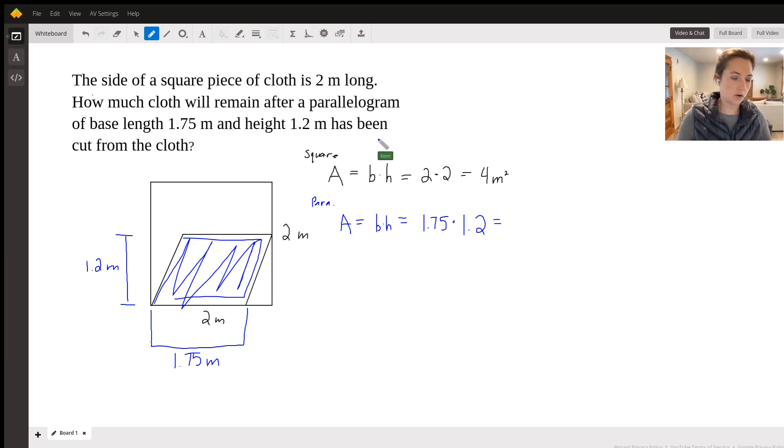And then you're going to type that into your calculator. So 1.75 times 1.2 gets us 2.1, and again, this would be square meters.